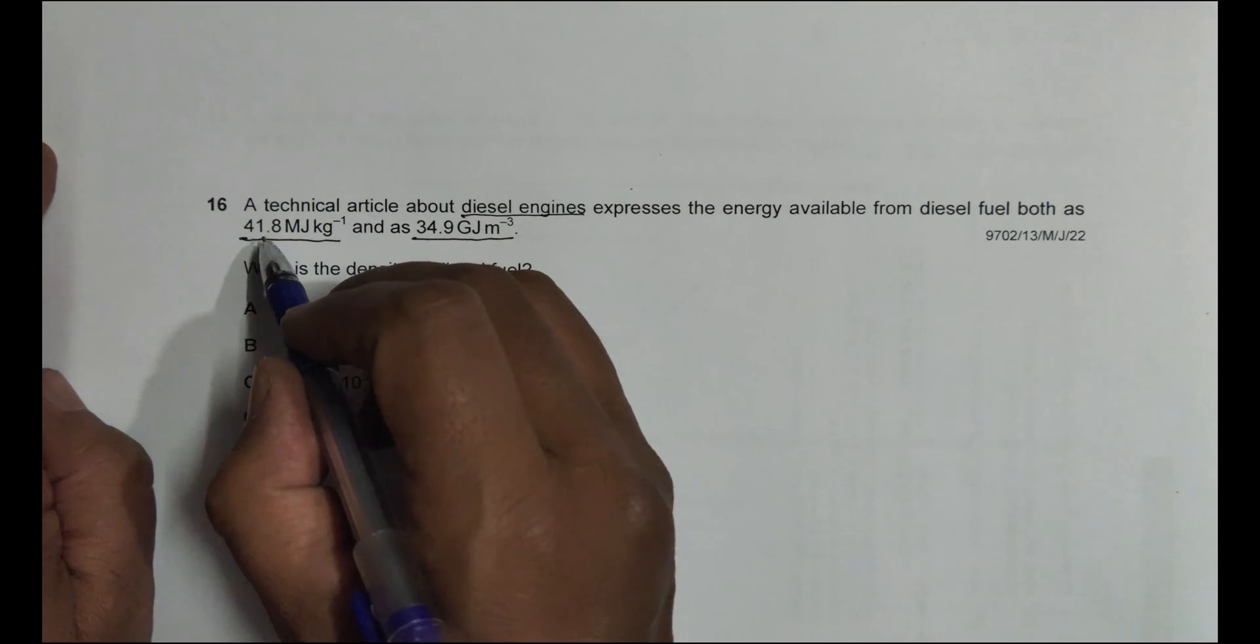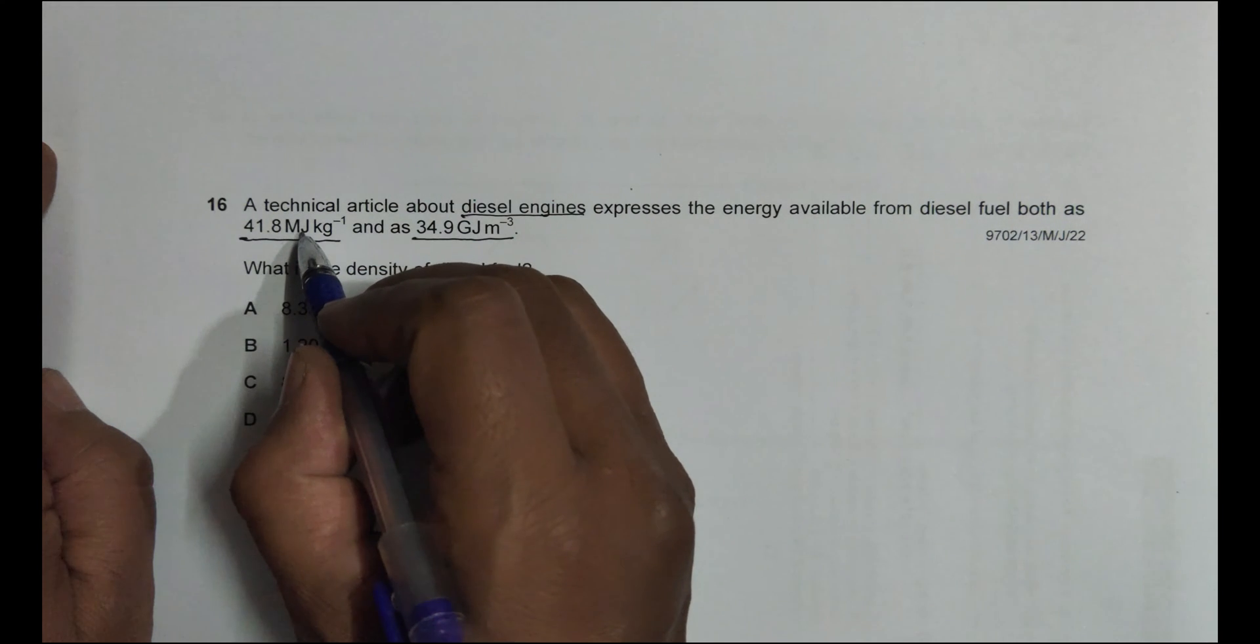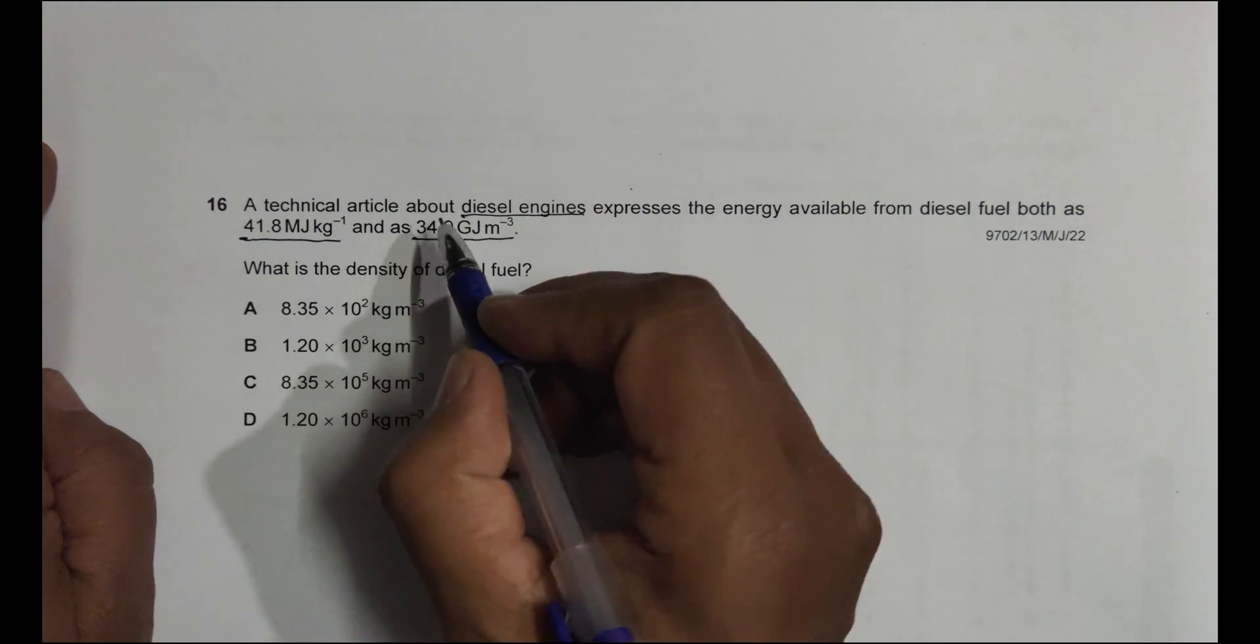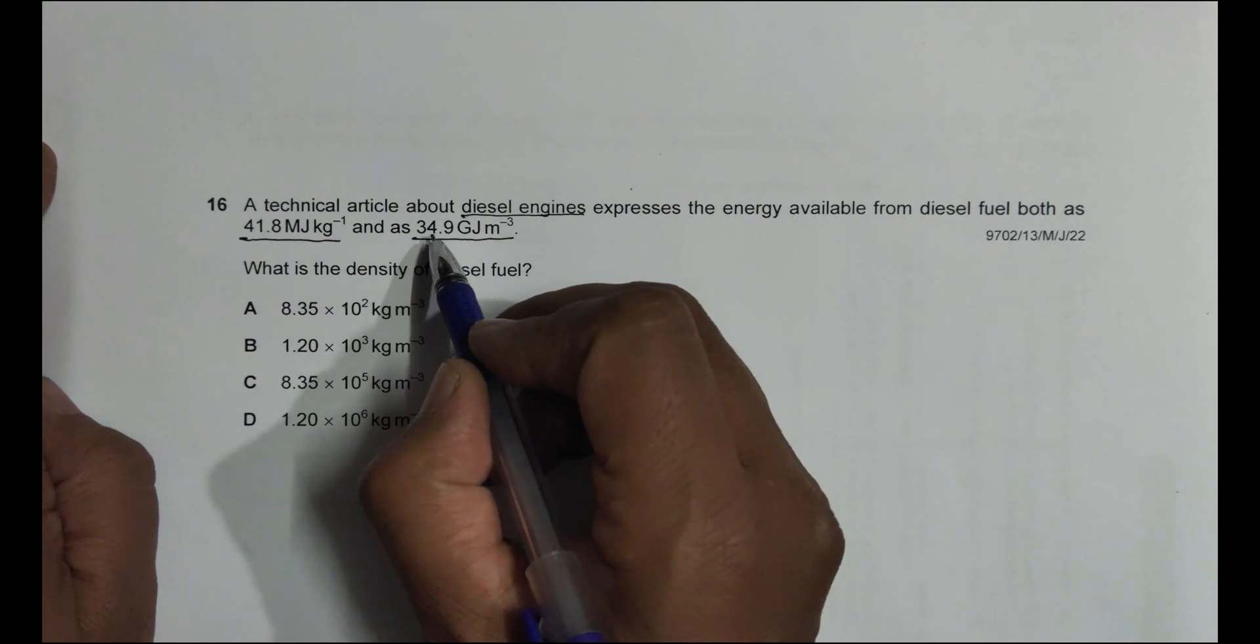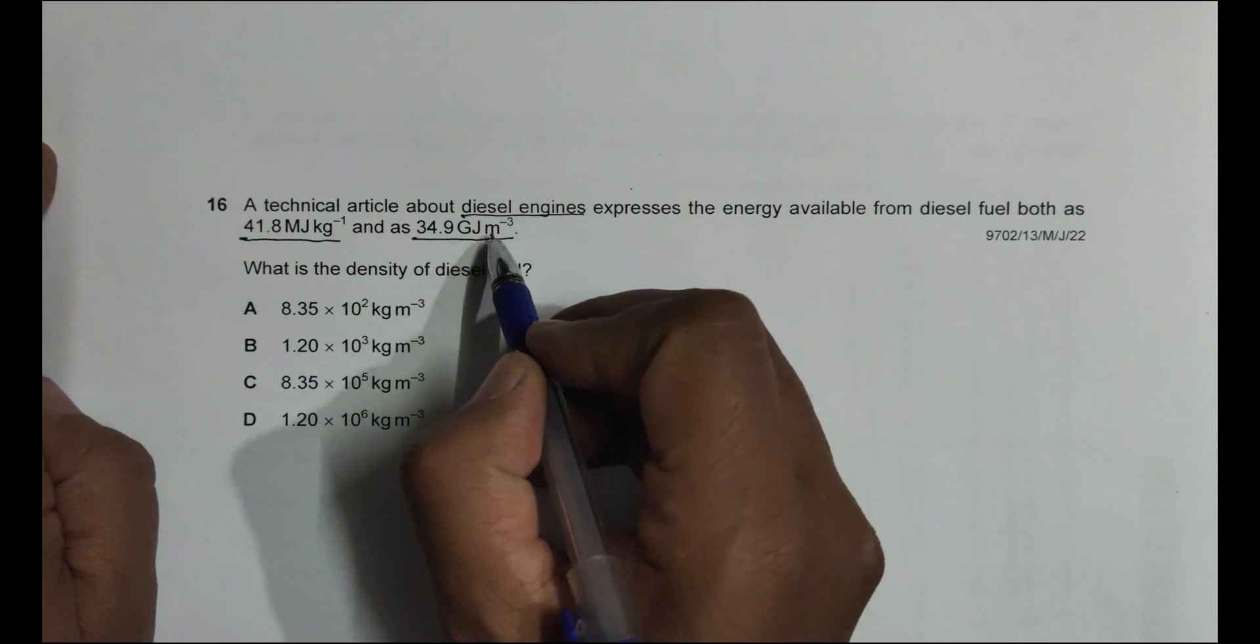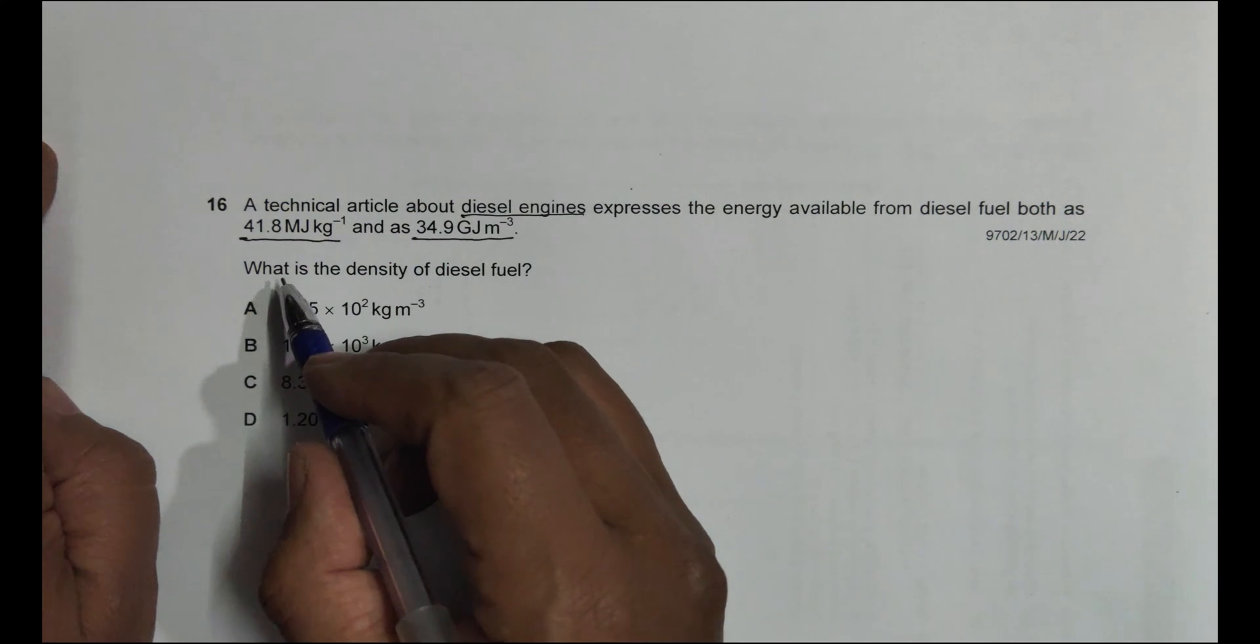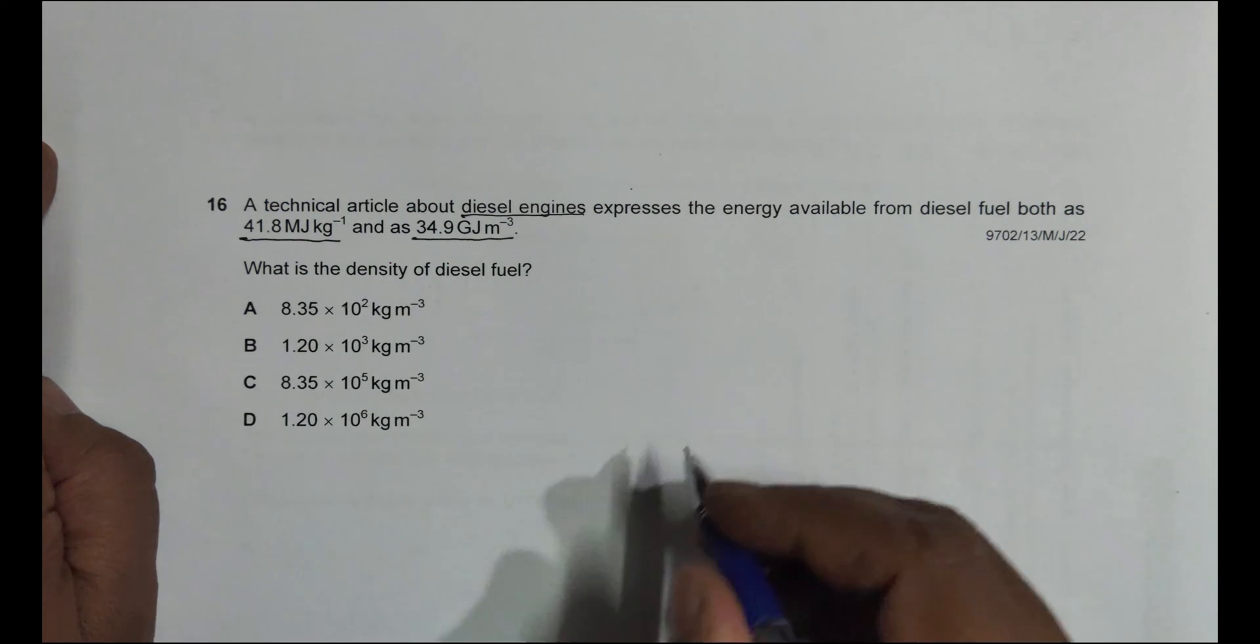both as 41.8 megajoule per kg and as 34.9 gigajoule per meter cube. So one of them expresses energy in terms of mass and the other expresses energy in terms of volume. So from this data, we have to find what is the density of the diesel fuel.